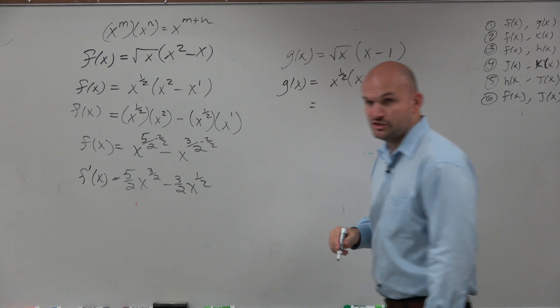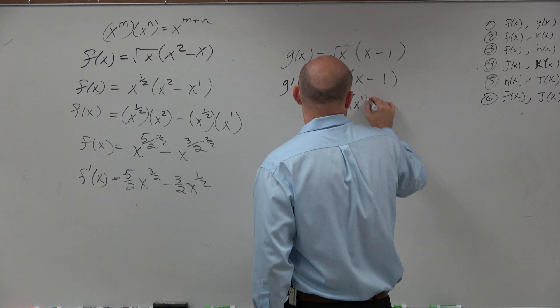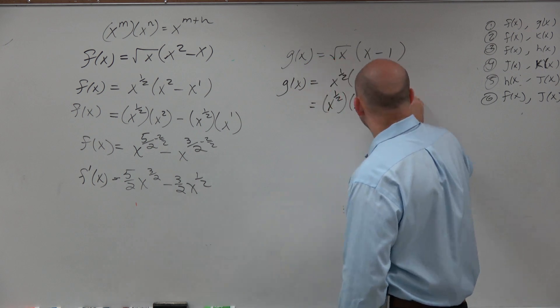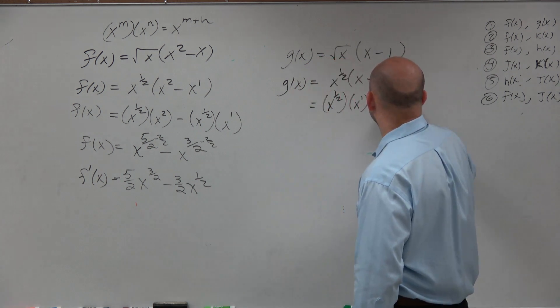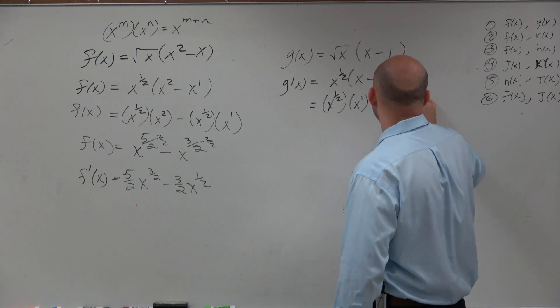Then we can go ahead and distribute. So basically, we have x to the 1/2 times x to the first minus x to the 1/2 times 1.